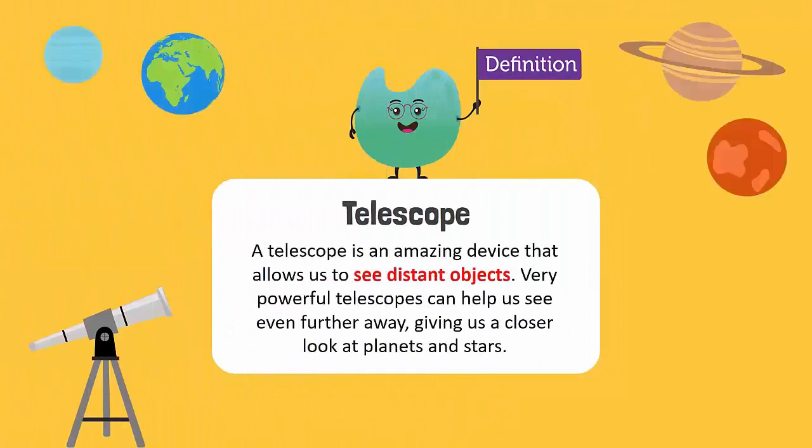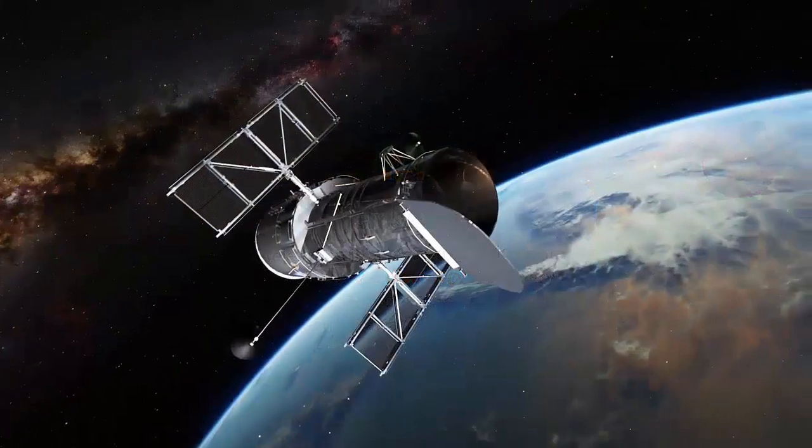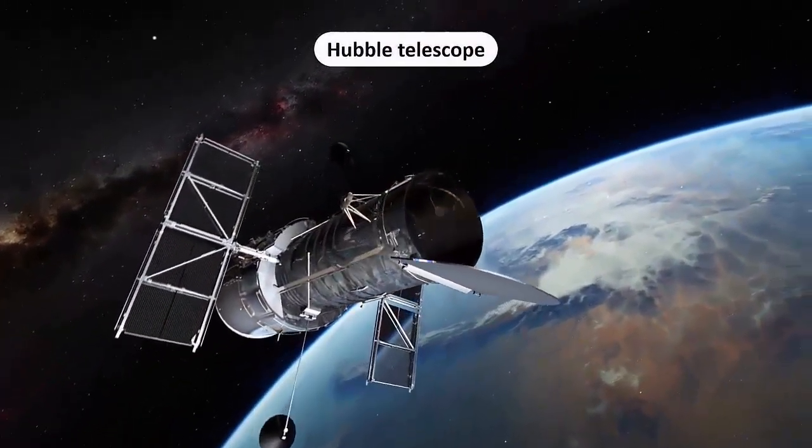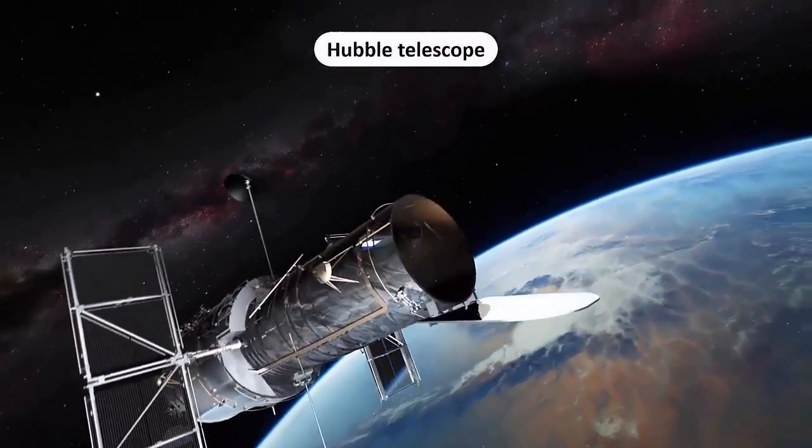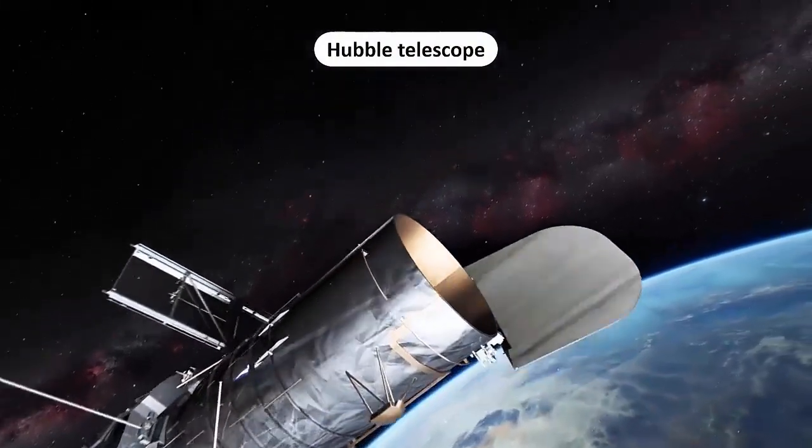A telescope is an amazing device that allows us to see distant objects. Very powerful telescopes can help us see even further away, giving us a closer look at planets and stars. One example of this is the Hubble telescope. When it orbits the Earth, we can see a detailed view of space.